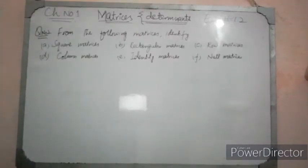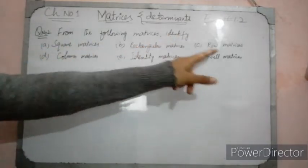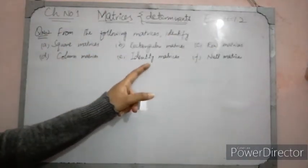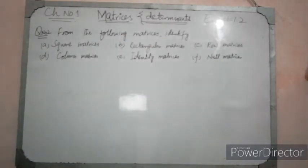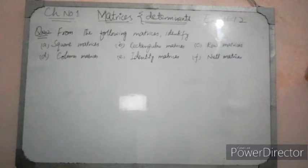The remaining parts will be solved — check the definitions. Let's move on to our next question. The statement is: from the following matrices, identify square matrix, rectangular matrix, row matrix, column matrix, identity matrix, and null matrix. This is possible when you know many types of matrices. In my playlist, there is a lecture on types of matrices which you can see.